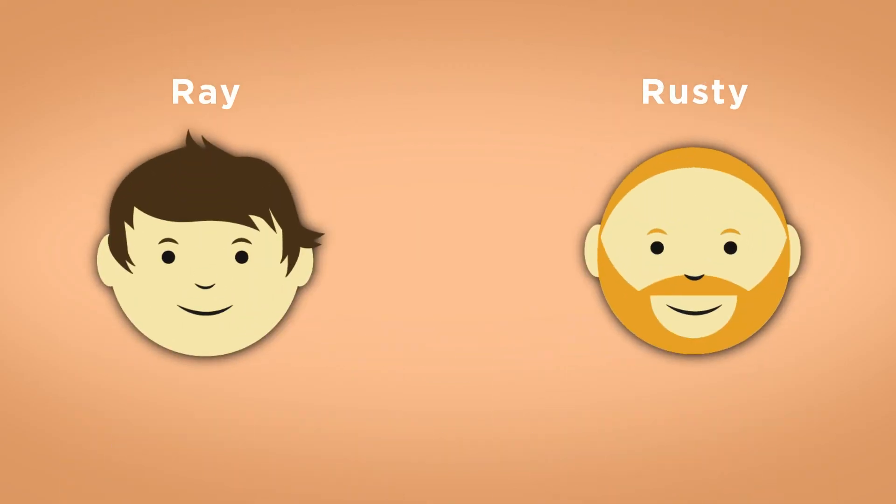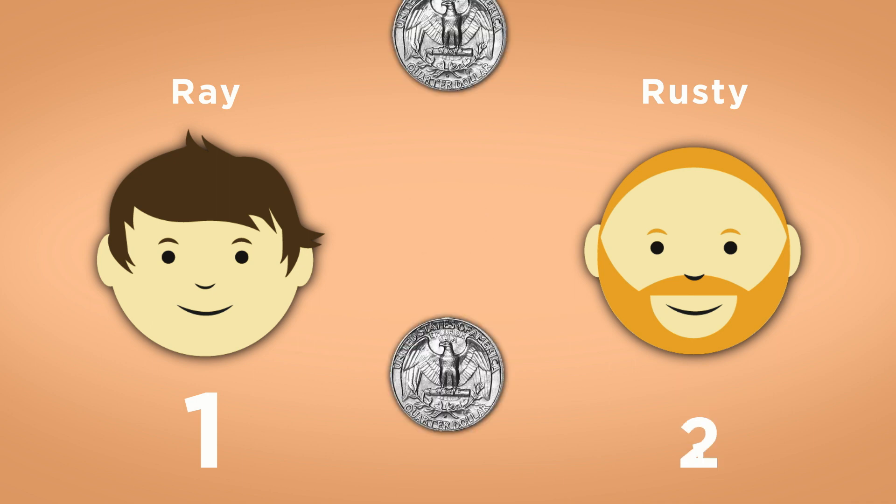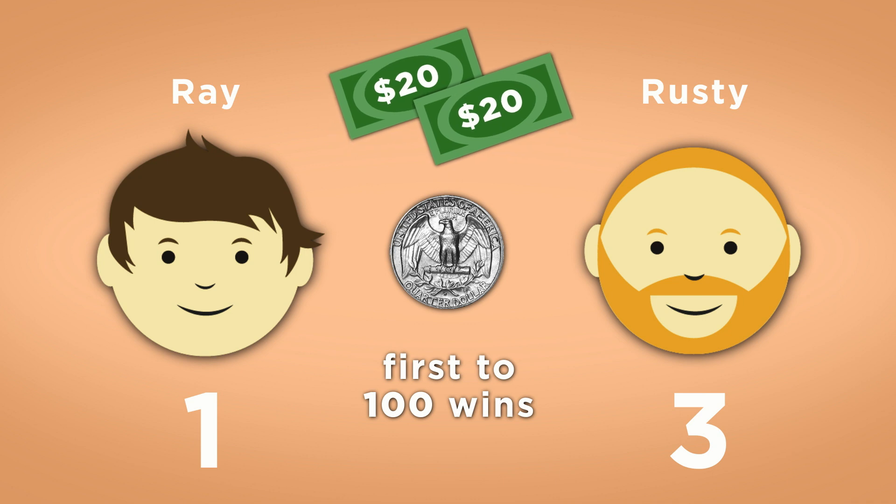Ray and Rusty are playing the most boring gambling game ever. Each round, they flip a coin. If it's heads, Ray gets a point. And tails, Rusty gets a point. First person to 100 points wins. Before the game began, both players contributed $20 to the pot and agreed that the winner would get all $40. But they get interrupted before either player reaches 100 points. How should they fairly split the $40?